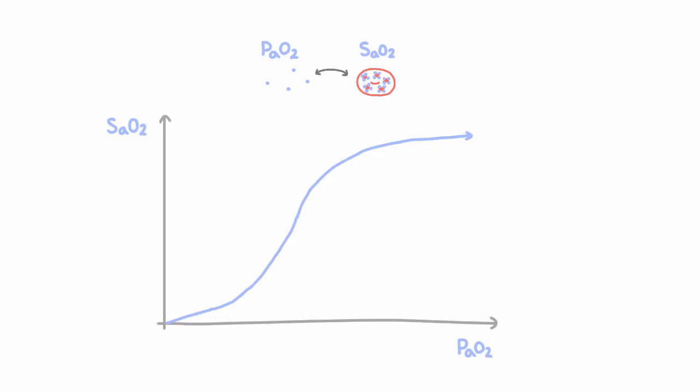For example, a PaO2 of 60 millimeters of mercury is roughly equal to an SaO2 of 90%, and a PaO2 of 40 millimeters of mercury correlates with approximately 75% saturation. Bear in mind that these relationships are not exact because the curve can shift under different conditions.